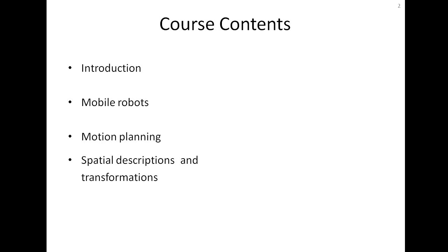Then we shall learn about spatial descriptions and transformations — basic concepts used for kinematics. We shall cover positions, orientation, translation, rotations, and transformations. After that we will learn about degrees of freedom of a robot, configuration and velocity constraints, and finally rigid body motions.